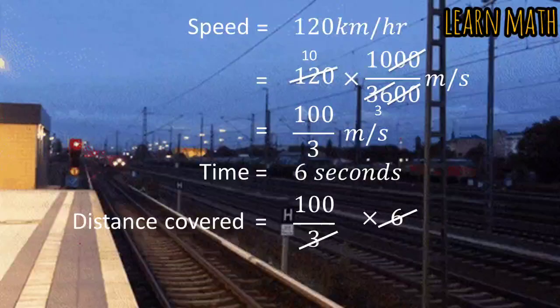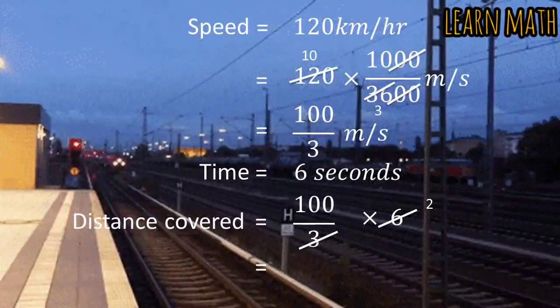Simplify this and we will get 200. So, the distance covered in 6 seconds is equal to 200 meters.